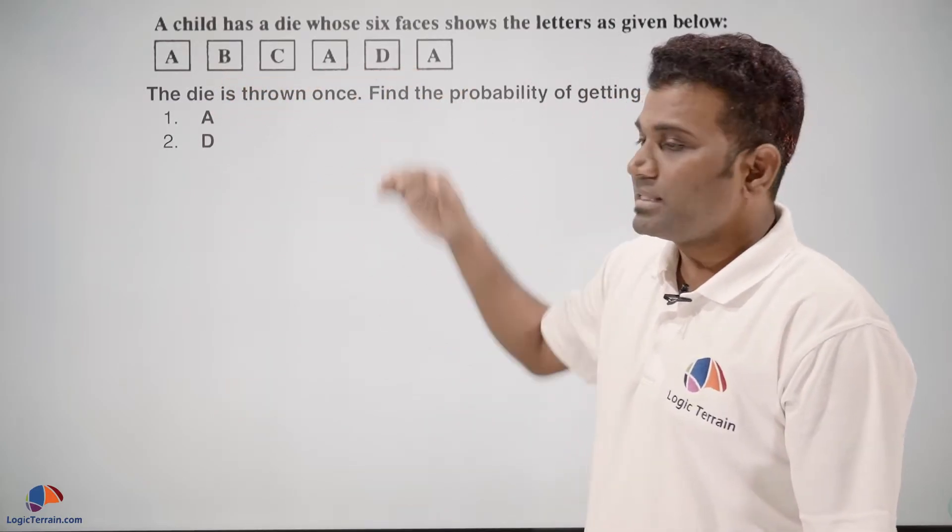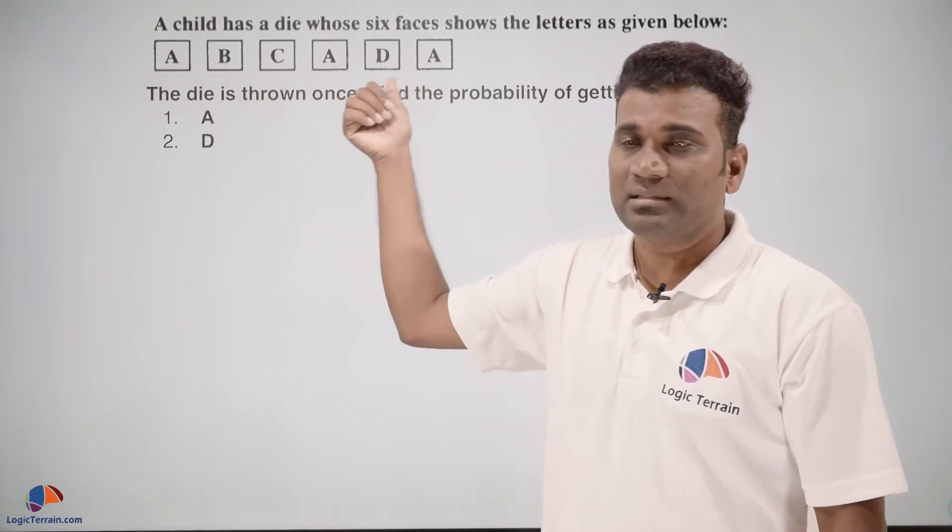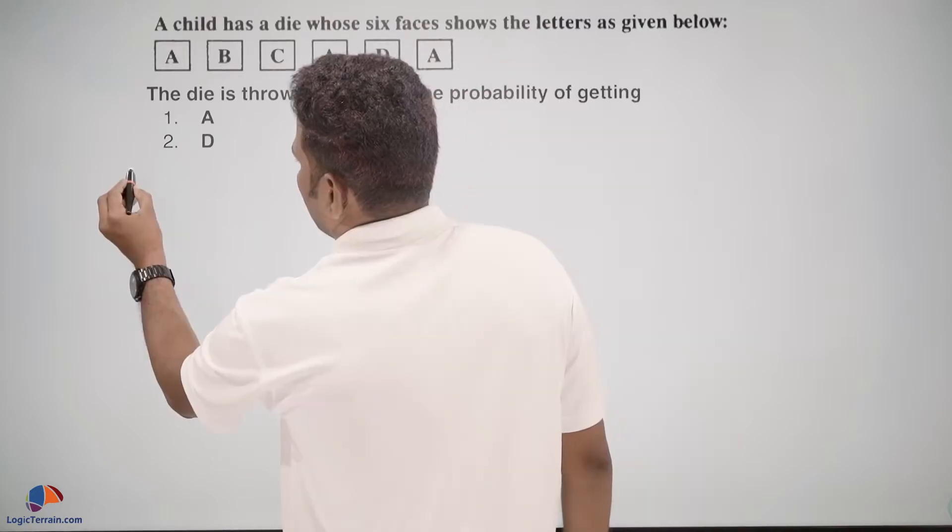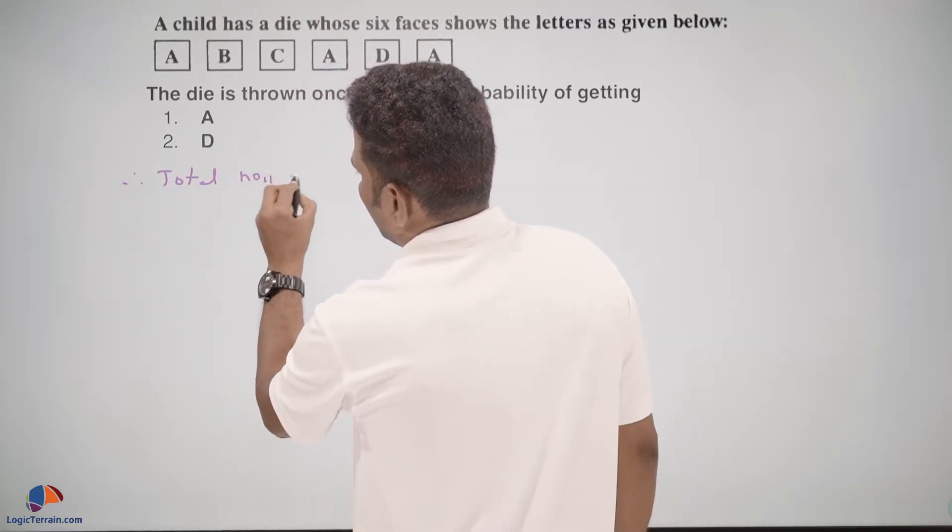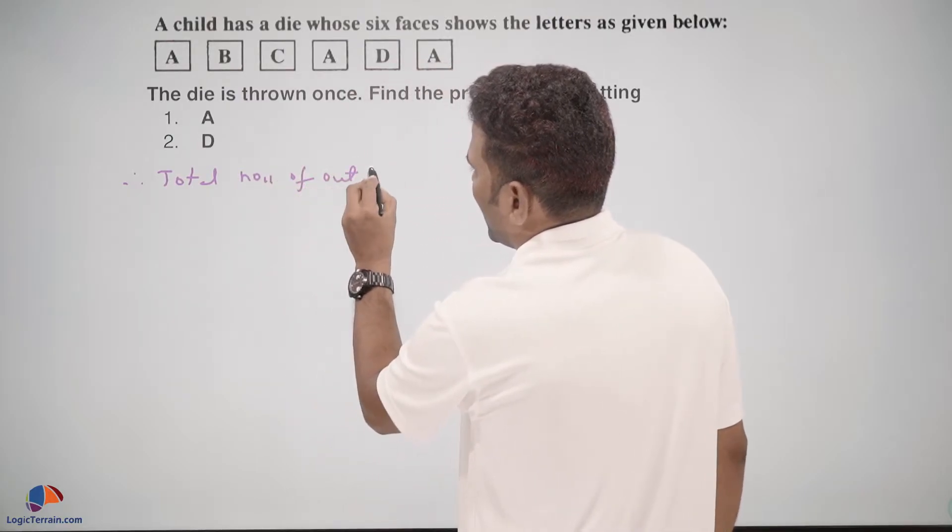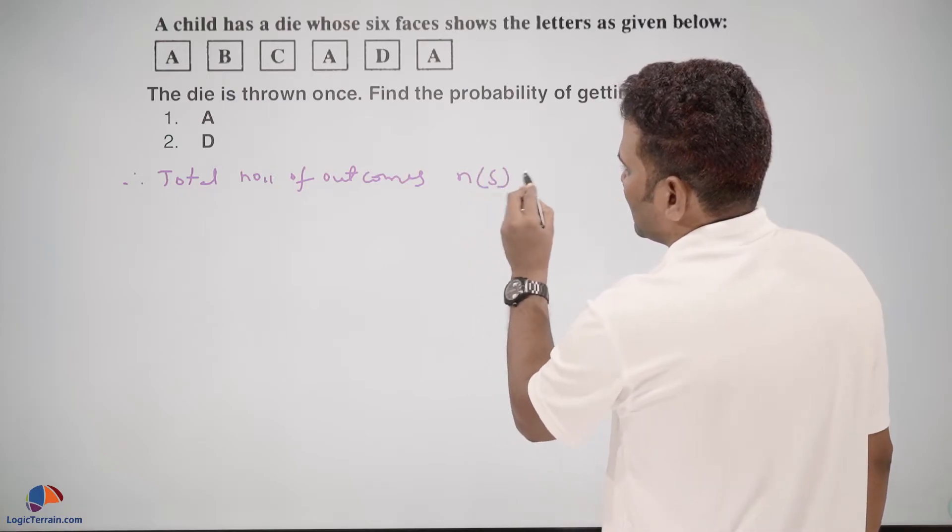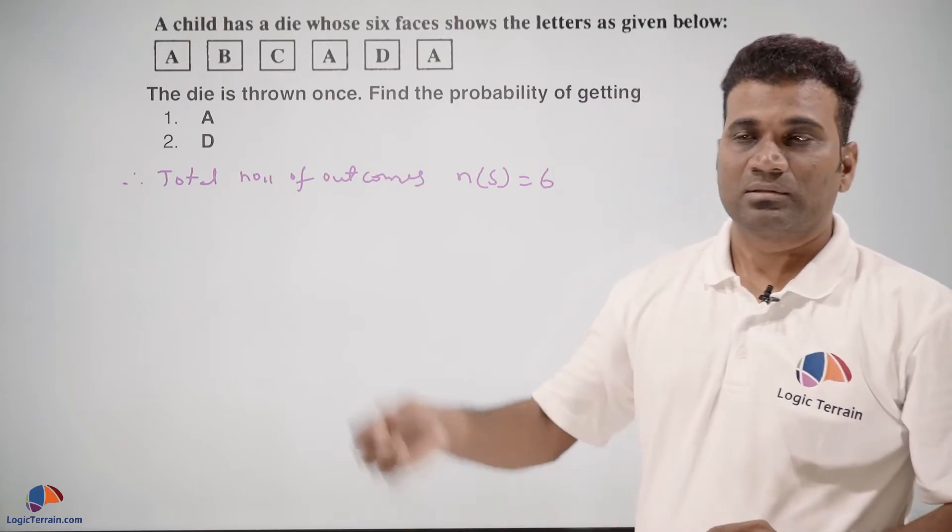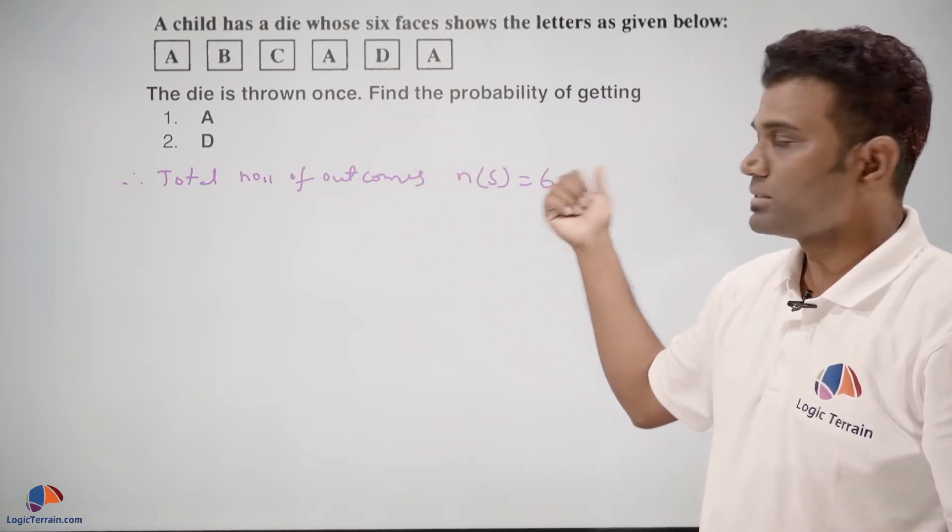Clearly we can see the die has six faces, and each face has these letters. The die is thrown once. Therefore, total number of outcomes, n(S), equals 6, because the die is thrown only once. So total number of outcomes is 6.